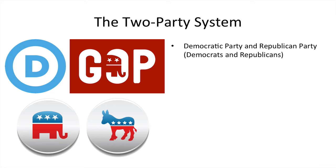The elephant is basically the logo for the Republican Party, and the donkey was previously used — actually still used sometimes — for the Democratic Party, even though their formal logo today has only a 'D' in it. The GOP is another, more informal name for the Republican Party. It stands for Grand Old Party, but it's formally called the Republican Party.